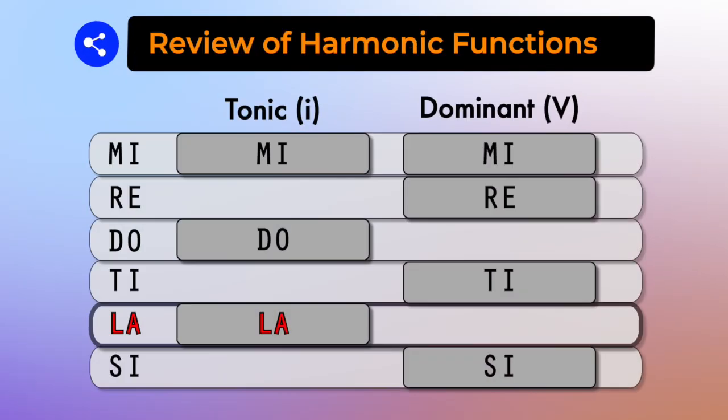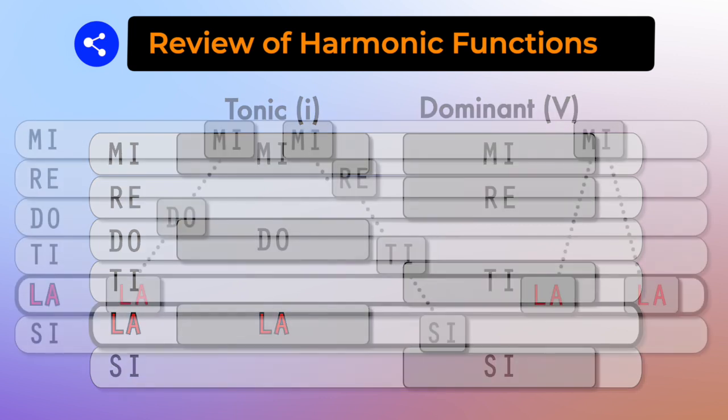Let's review our harmonic functions in minor tonality. Any combination of La, Do, Mi is minor tonic. Any combination of Mi, Re, T, Z is minor dominant.